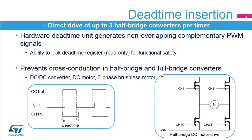The dead-time insertion function provides two non-overlapping complementary PWMs from a reference PWM signal. The STM32 timers include up to three dead-time generators for OC1, OC2, and OC3 channels. The dead-time duration is programmed with an 8-bit value. This value can be locked by the user to prevent it from being corrupted during runtime, done by setting a write-once lock bit which switches the dead-time register into read-only mode until the next MCU reset.